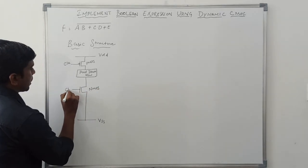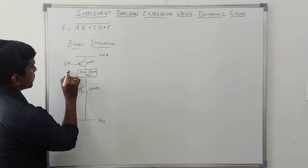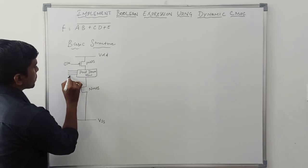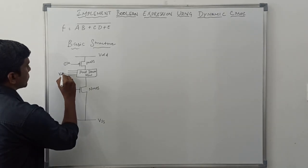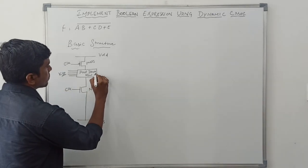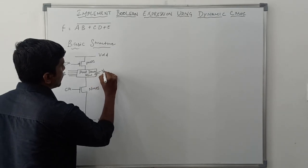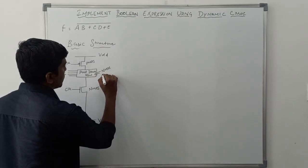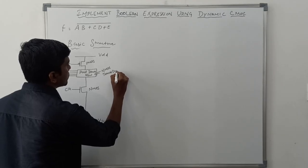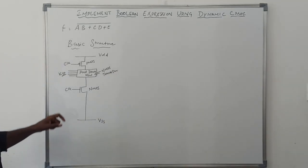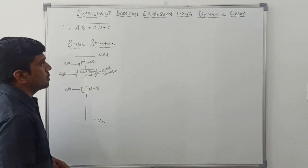The gate terminal of the clocked NMOS is connected to clock. This is the pull-down network. The logic inputs are connected to the pull-down network as K inputs. This pull-down network consists of NMOS transistors. So now I am going to draw the dynamic structure for this boolean expression.